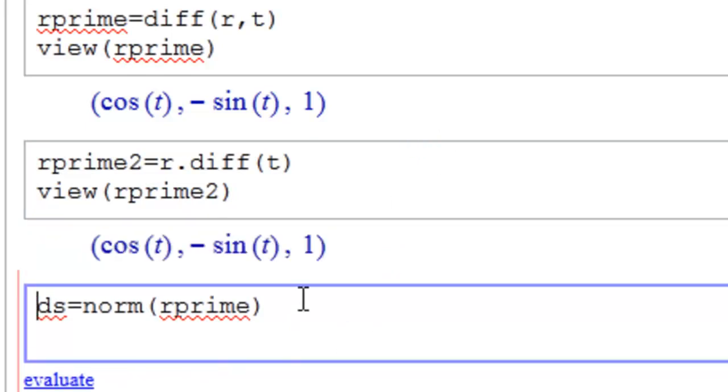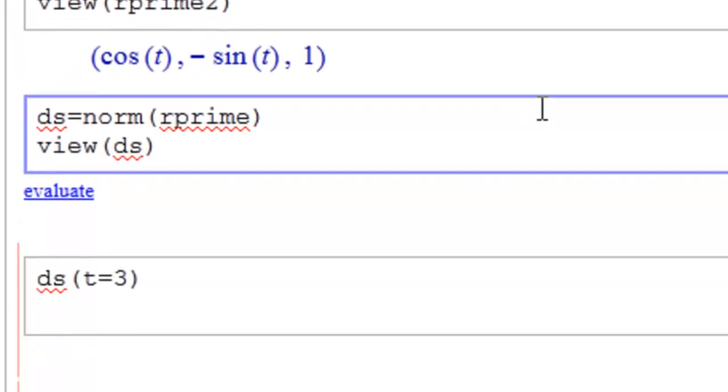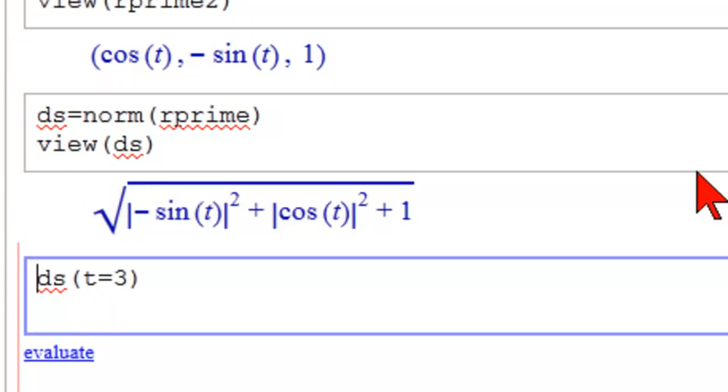Here's where we're going to move from a vector function into a scalar, that is a regular function, by taking the norm. It needs a view there, so view ds, and then we get to see it. There it is.